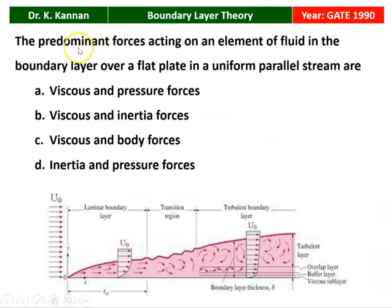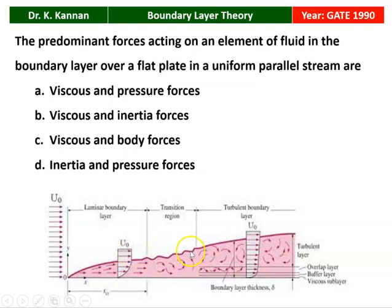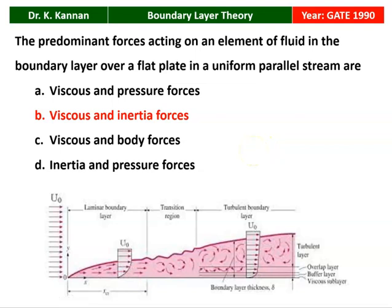The next question from the 1990 question paper: The predominant forces acting on an element of fluid in the boundary layer over a flat plate in a uniform parallel stream are (A) viscous and pressure force, (B) viscous and inertia force, (C) viscous and body force, or (D) inertia and pressure force. Within the boundary layer, the dominant forces are the viscous force and the inertia force. Reynolds number is based on viscous and inertia forces, so the correct answer is option B.